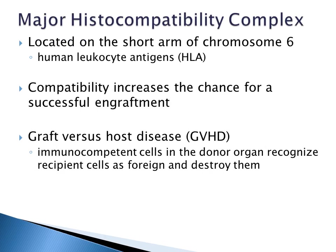The major histocompatibility complex, or MHC, is a group of genes located on the short arm of chromosome 6. The MHC gene products are called human leukocyte antigens, or HLA. When a transplant is performed, compatibility of the HLA of the organ donor and the recipient increases the chance for a successful engraftment. Graft versus host disease, or GVHD, occurs when immunocompetent cells in the donor organ recognize the recipient cells as foreign and attack and destroy the recipient cells.